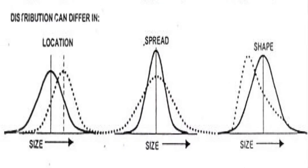When we talk about location, it means where the process should be and whether it is exactly there or varying. For example, if a dimension is 5 ± 0.2 mm, the process may be at 5 mm, 4.9, 4.85, 4.8, or beyond. The second aspect is spread — the variation between the minimum and maximum value — which can be controlled through common or special causes.